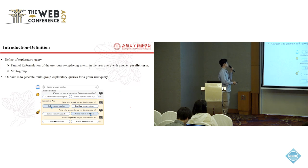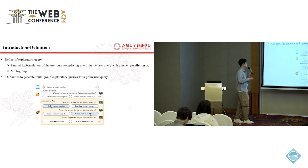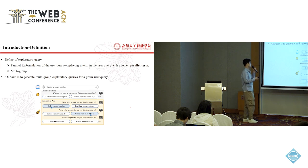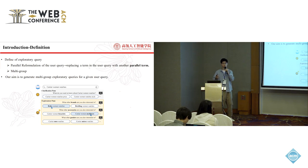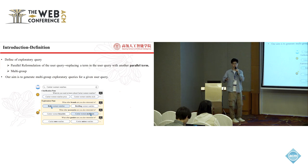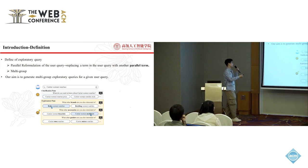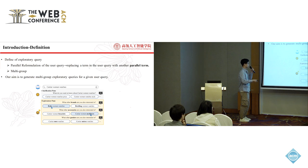We first define the exploratory query as a parallel reformulation of the user query — it means replacing a term in the user query with another parallel term. For example, the exploratory query 'Rolex Women Watches' is obtained by replacing the term 'Cartier' in user query 'Cartier Women Watches' with a parallel term 'Rolex.' Here a term may be a word or phrase. Besides, we also define that a user query may correspond to multi-group exploratory queries because the user query may contain multiple keywords, so replacing different keywords corresponds to different groups. Our aim is to generate multi-group exploratory queries for a given user query.